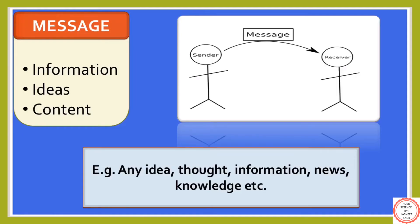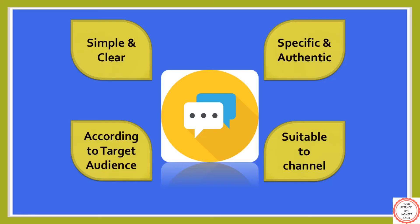The next one is message. Messages are any thought, information, news, knowledge, etc., which is communicated by the sender to the receiver. It can be formal or informal. There are certain qualities of messages which a person needs to keep in mind: the message has to be simple and clear, specific and authentic, and suitable to the channel. For example, while you use social platforms to deliver your message, you should not say something which may harm the belief system of the other person. Your message has to be according to the target audience.